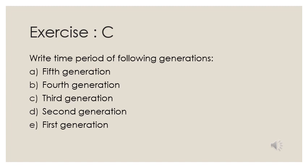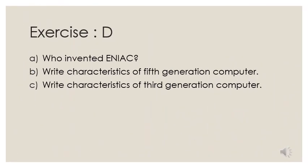Exercise C: Write the time period of the following generations — 5th, 4th, 3rd, 2nd, and 1st generation. Exercise D: A) Who invented ENIAC? B) Write the characteristics of 5th generation computers. C) Write the characteristics of 3rd generation computers.